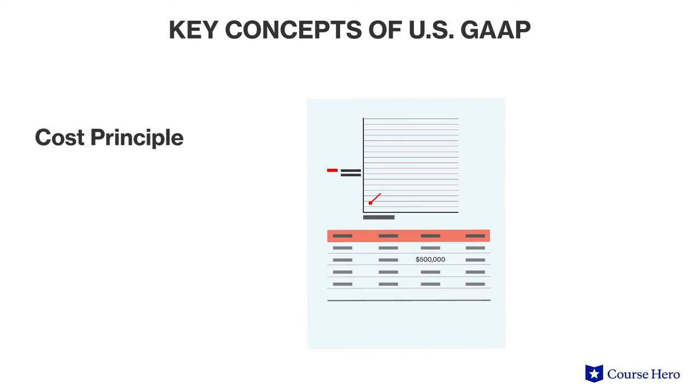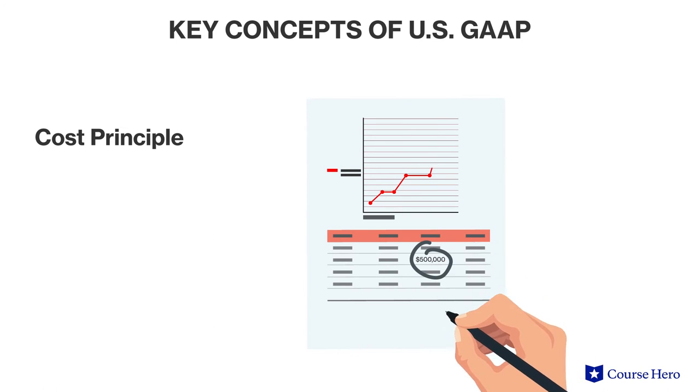Concept number two is the cost principle. Under the cost principle, all business transactions must initially be recorded at historical cost. This principle effectively implements a conservative approach to the financial statements. For example, if the value of an asset on the balance sheet increases over time, the company is still required to carry that asset investment at cost on the balance sheet.